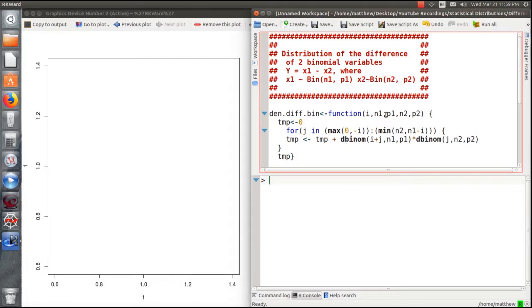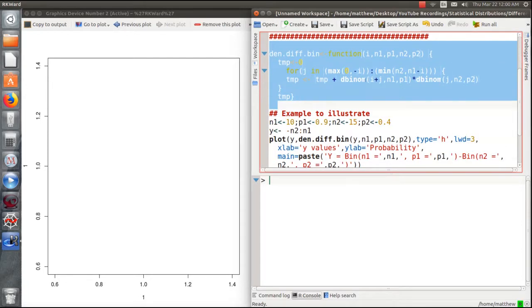So here are the parameters N1, N2, P1, P2. And this is for a given Y. We want to sum from the maximum of these two to the minimum of this, and it comes out as I call it temp, because we're saving it. So let's run this density.